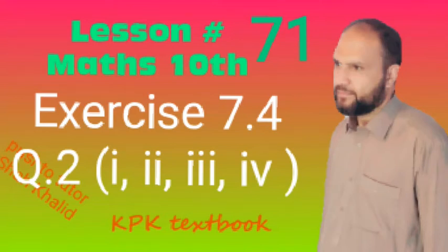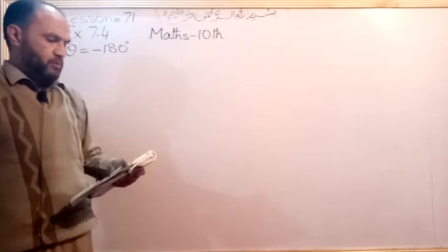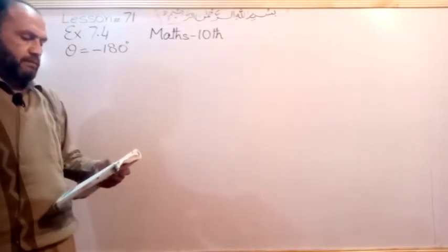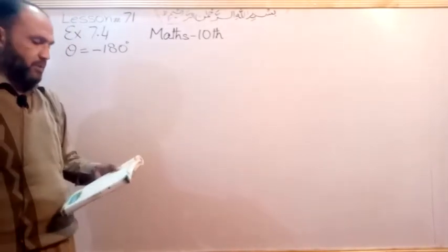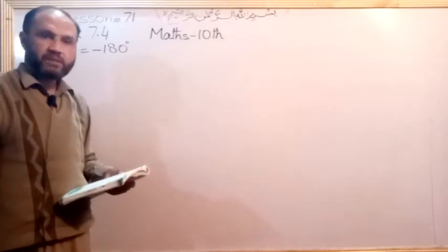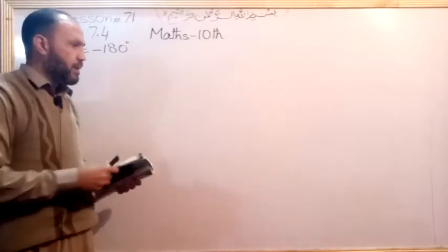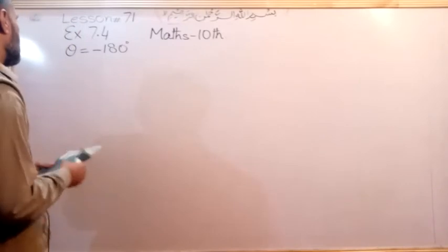Welcome to lecture number 71 in the 10th class math series. Today we're going to work on Exercise 1.4, question number two: find the trigonometric ratios of the following angles. Number one is minus 180 degrees.